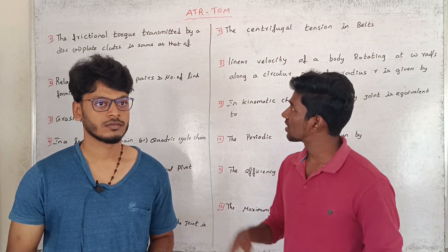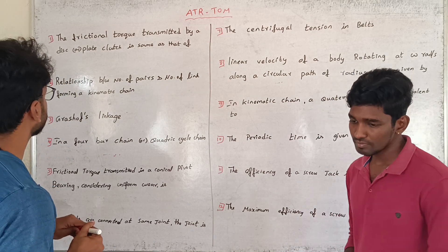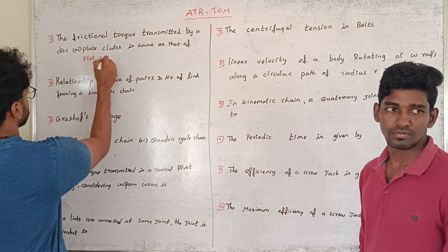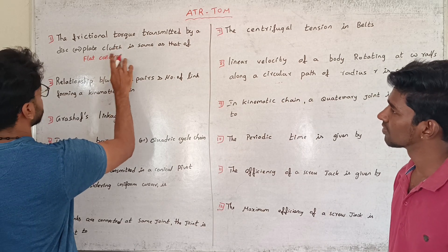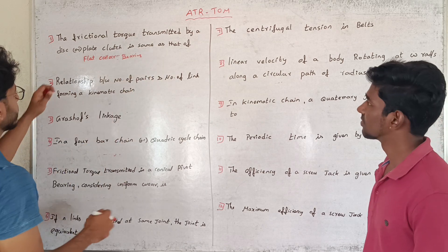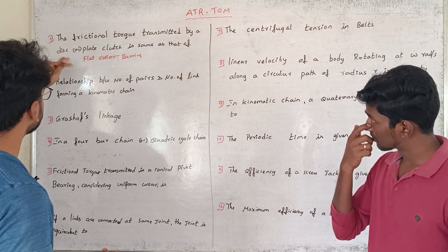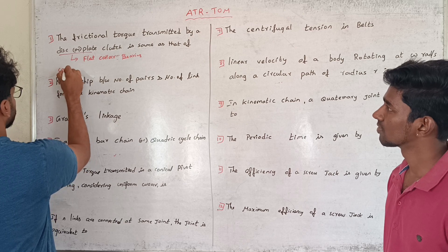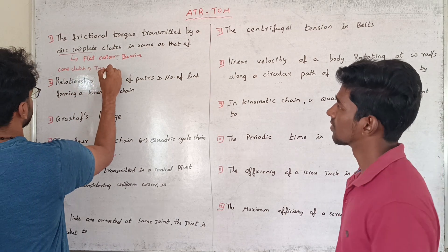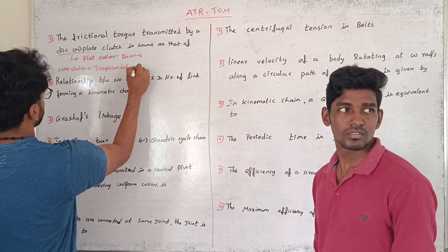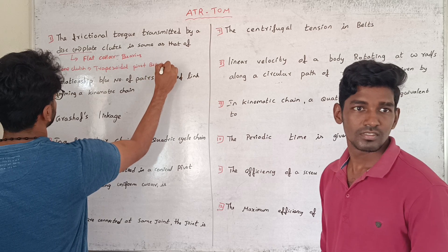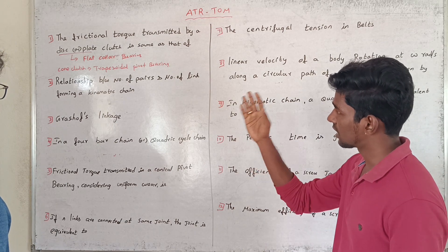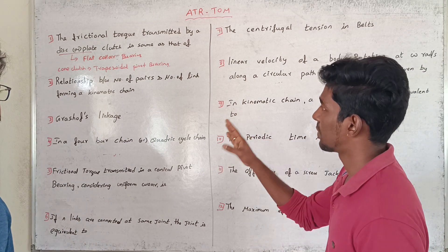First question: the friction torque transmitted by a disc or plate clutch is the same as the flat collar bearing. The flat collar bearing and the cone clutch share the same relationship. The trapezoidal pivot bearing is similarly related. The friction torque transmitted by a disc plate is the same as the flat collar bearing, and the cone clutch is the same as the trapezoidal pivot bearing.